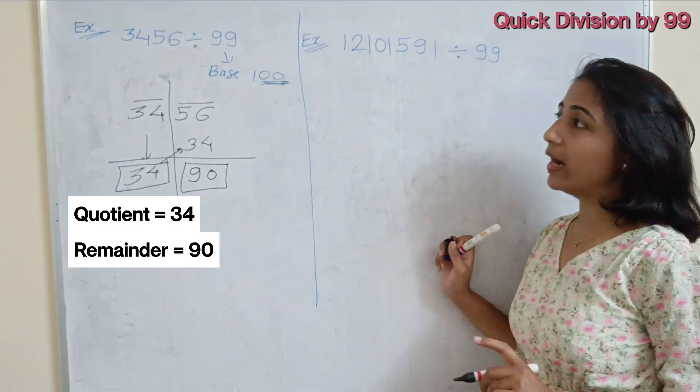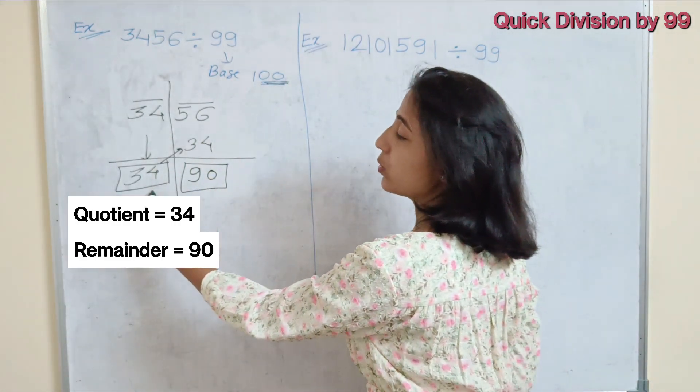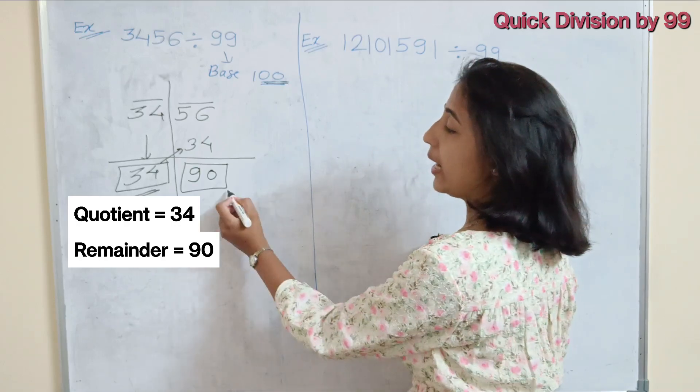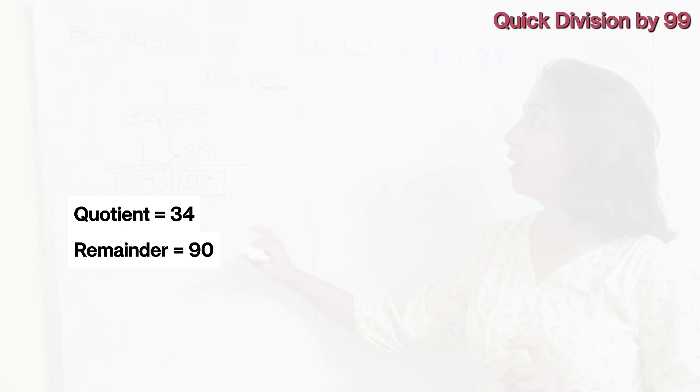So when we divide 3456 by 99, then quotient will be 34 and remainder is 90. So in this way, you have to solve the problem.